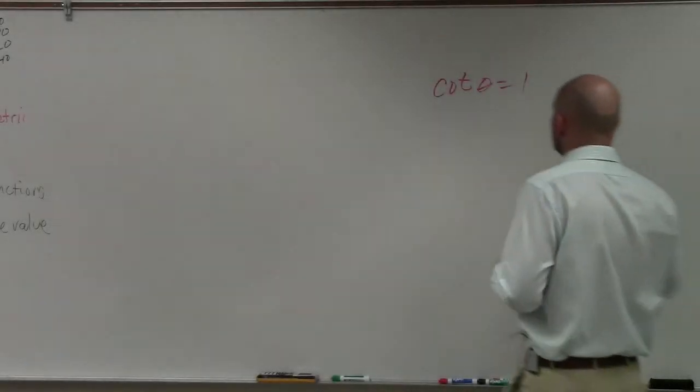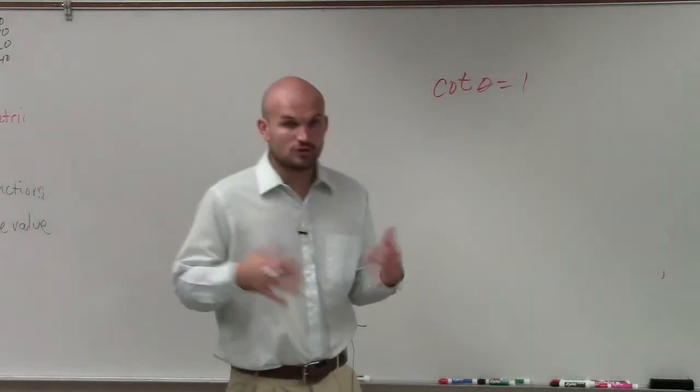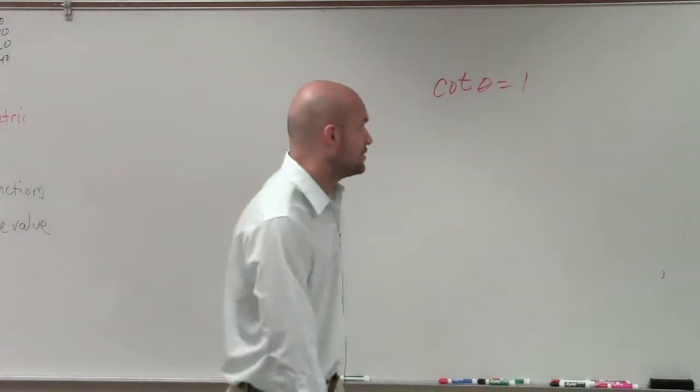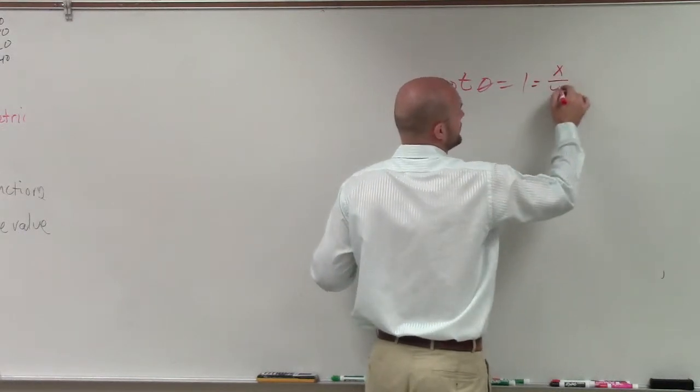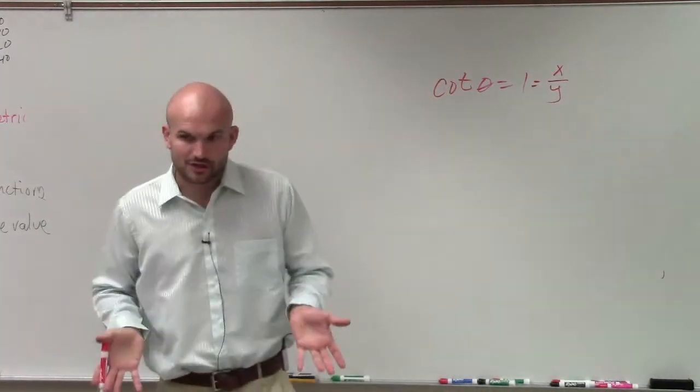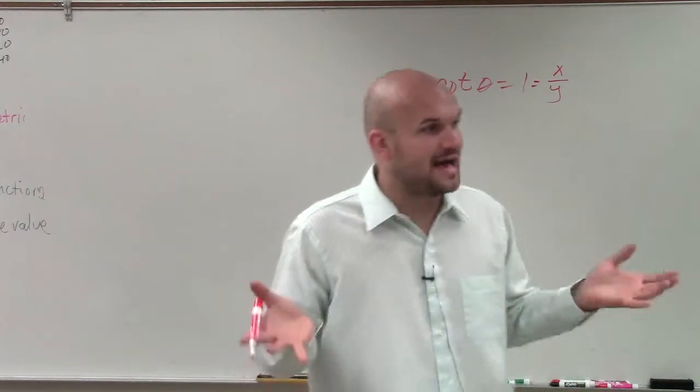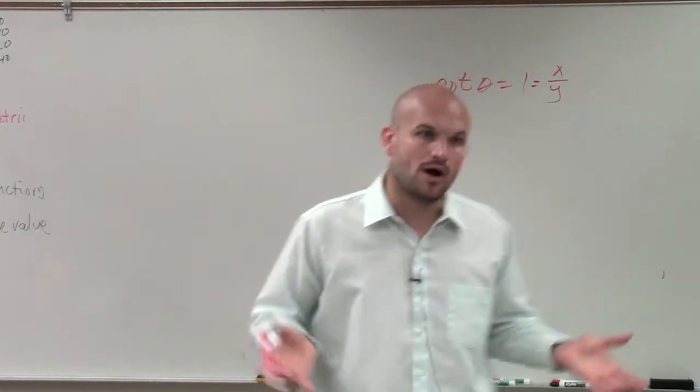It says cotangent of theta equals 1. Now remember, when we're talking about cotangent of theta, cotangent represents the x over the y. So I need to look at my unit circle and determine when do I have the same values over each other that are going to give me 1.